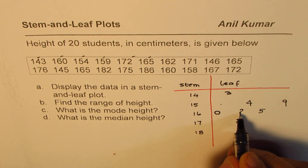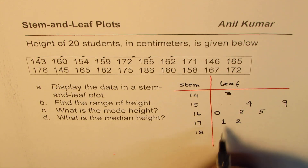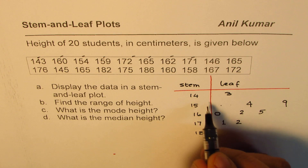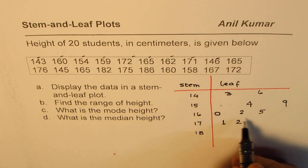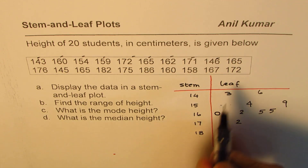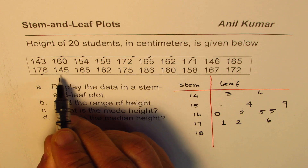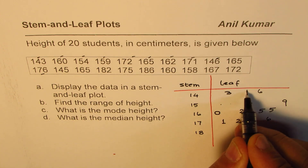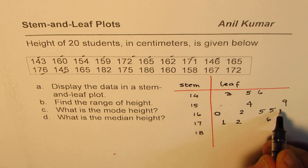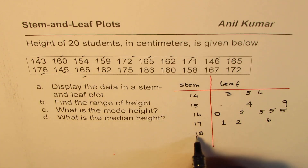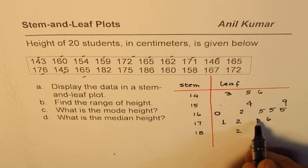Continuing to enter values: 171, 146, 165, 176, 145, 165, 182, and 175. Notice how I am arranging these numbers in increasing order within each row — that is necessary for the stem and leaf plot to work correctly.